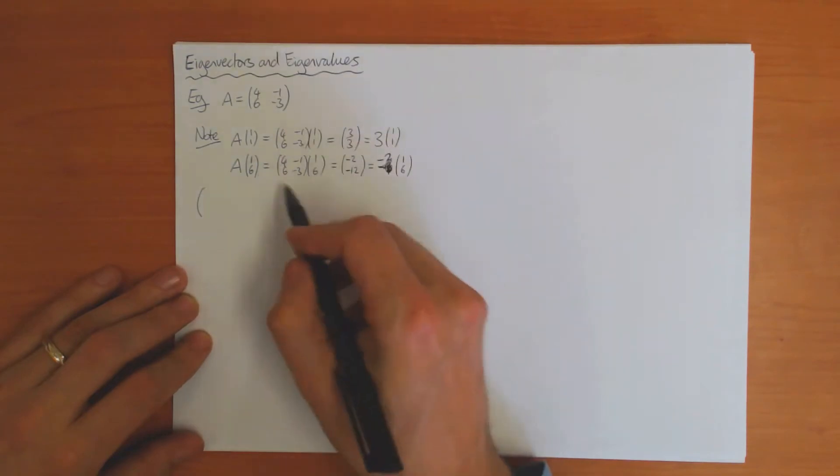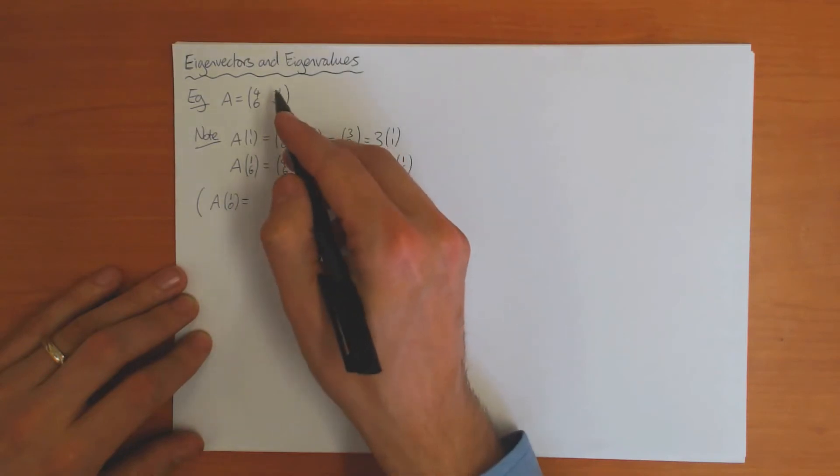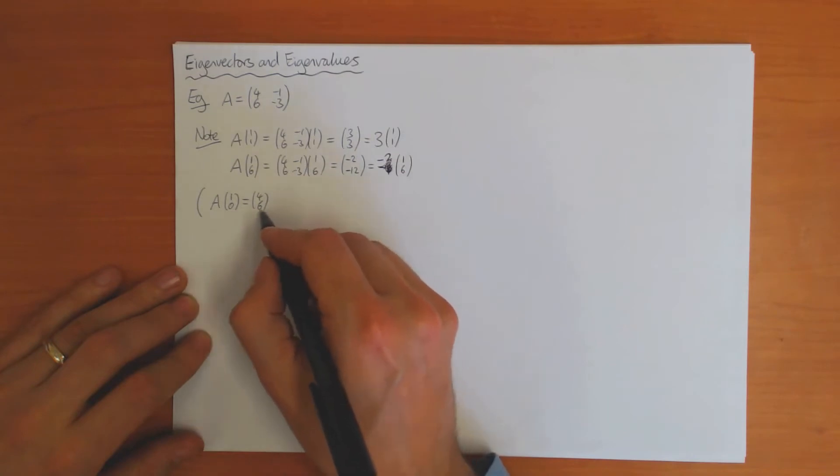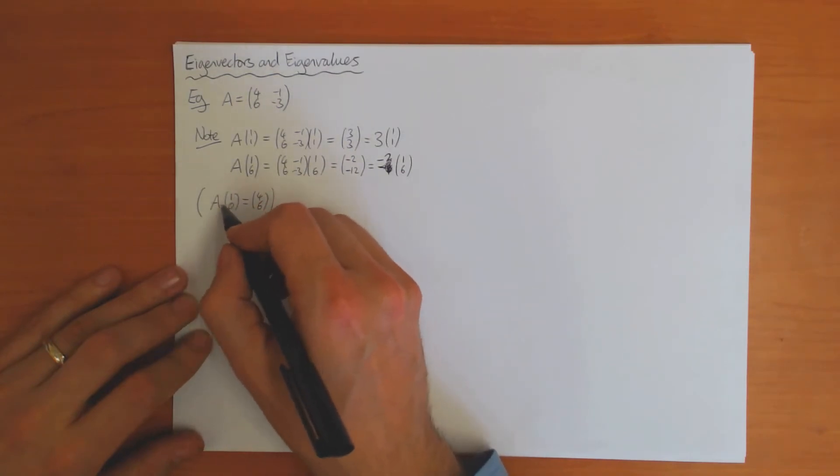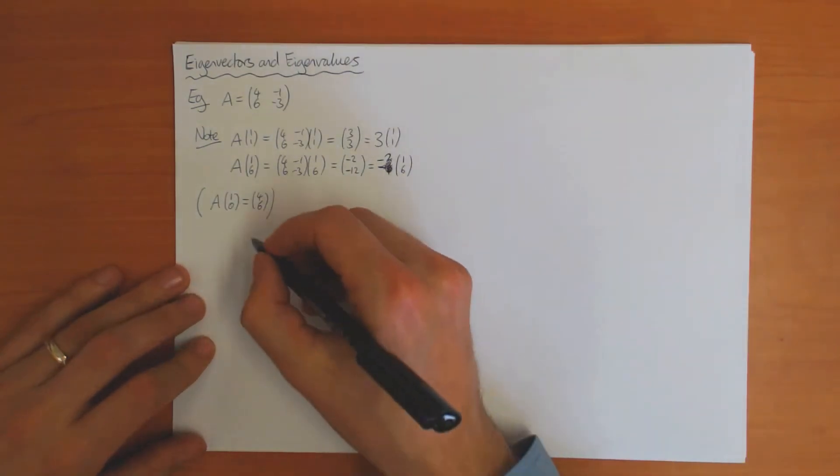It's important to realize that not all vectors transform like this. For example, if I take (1,0), then this gives me (4,6), which is obviously not in the same direction. So most vectors change direction under the transformation A, but these two vectors here are special—they don't change direction.